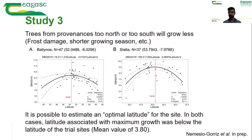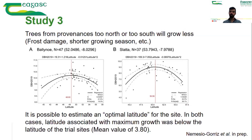What we saw is that for each of the two trials, the latitude associated with maximum growth was below the latitude of the trial sites — specifically 3.8 degrees more south than where the trial was standing. This means the best performing provenances in the Cork trial were from northern France and Belgium, and for Roscommon the best performing provenances were those from southern England.